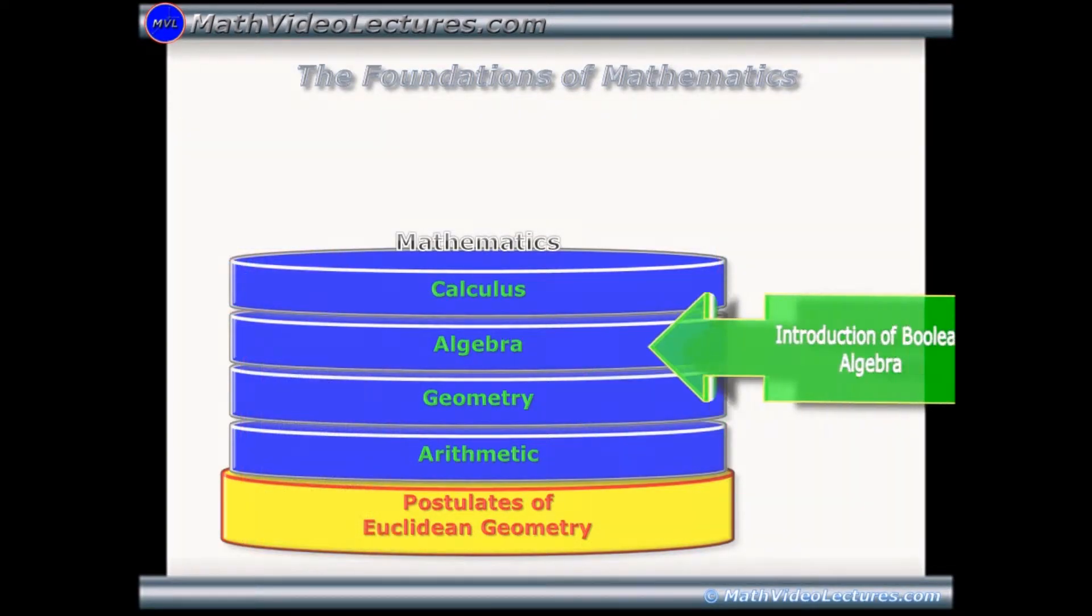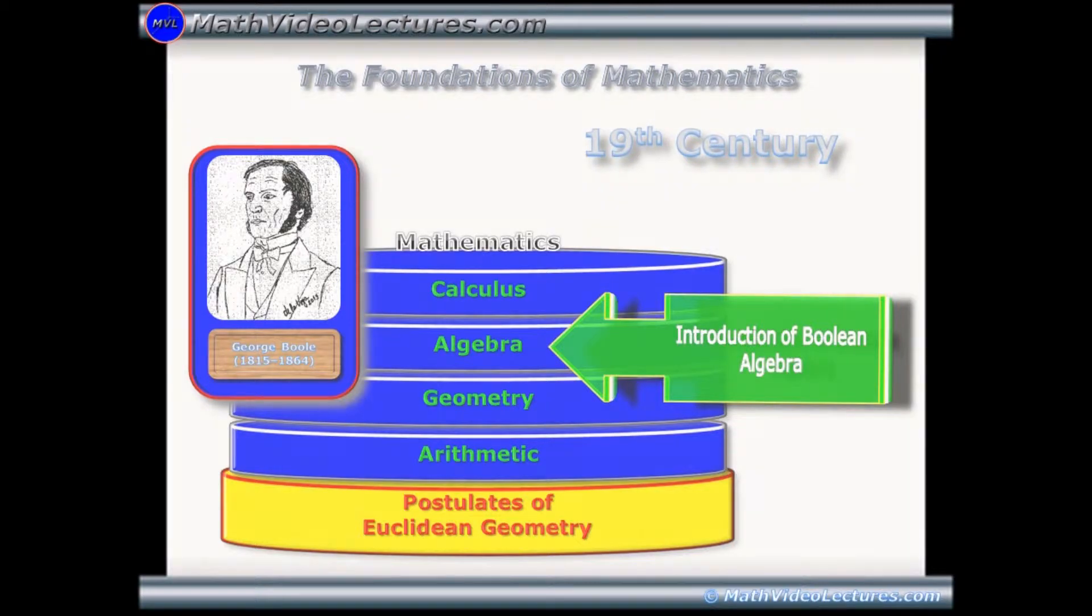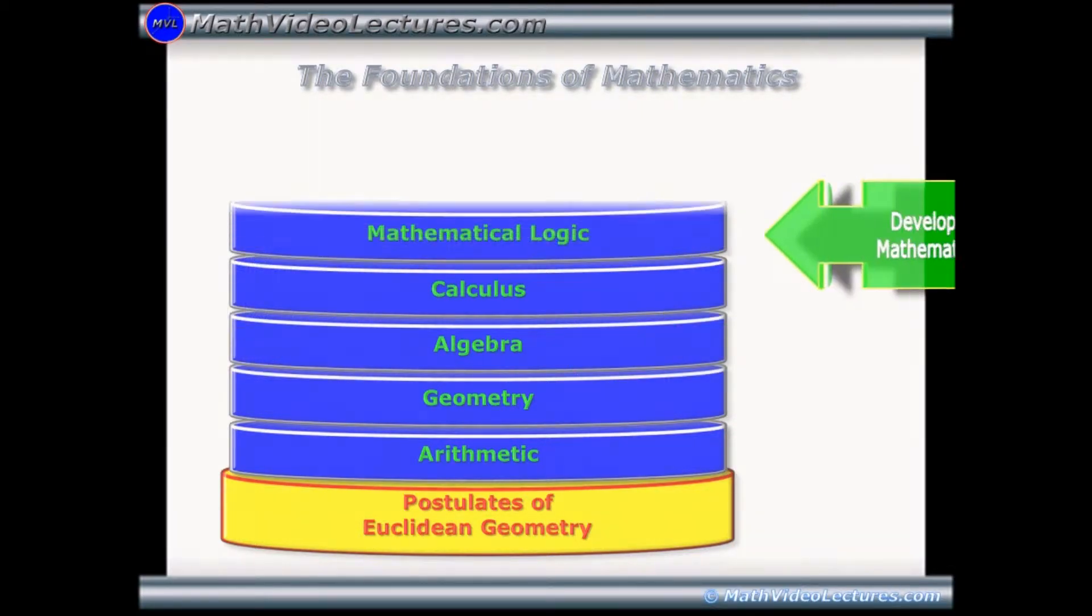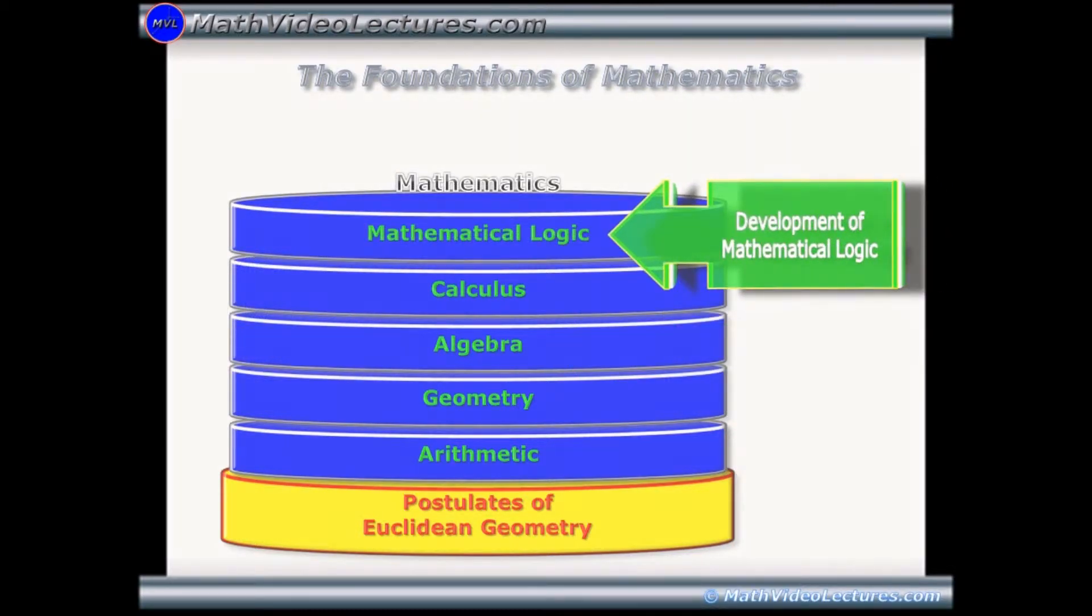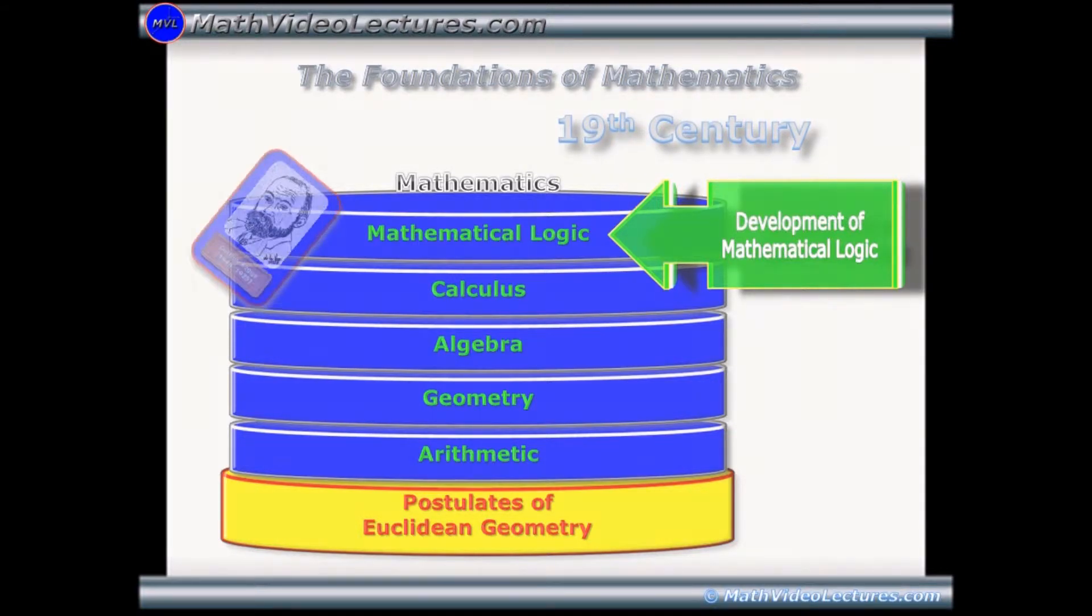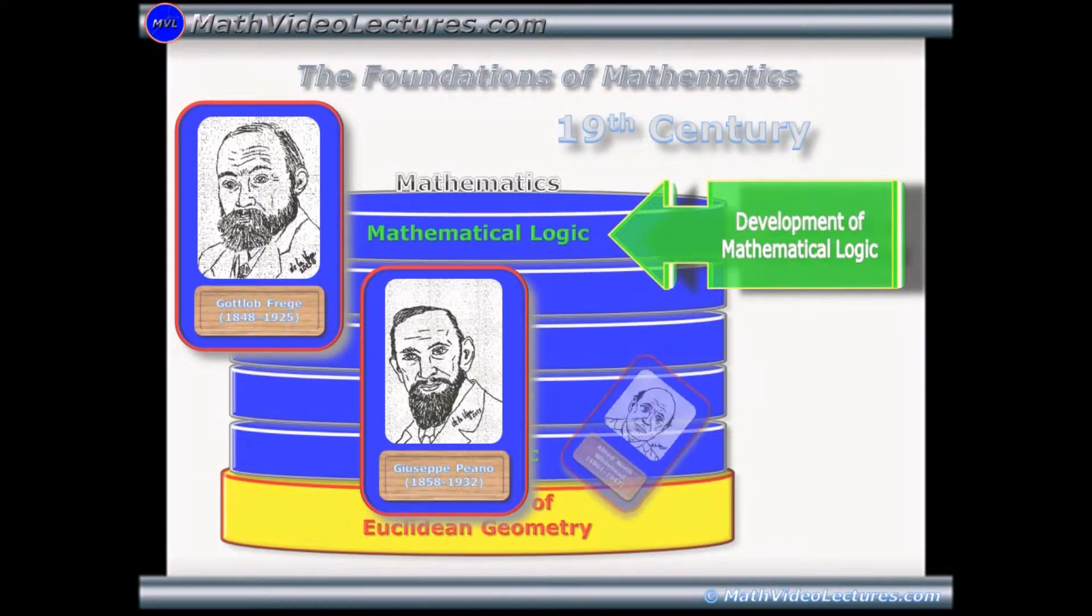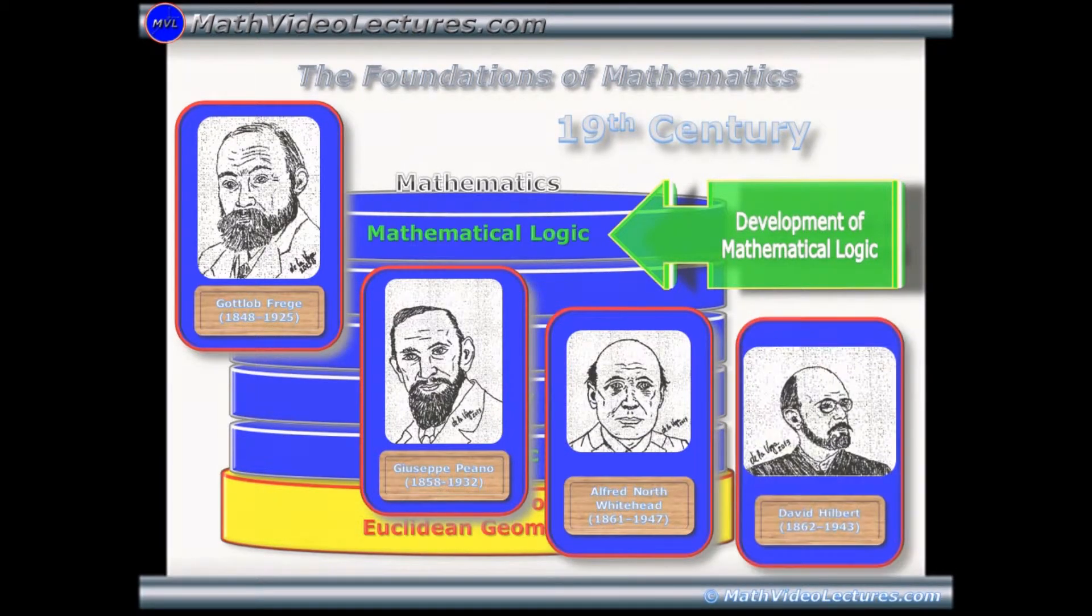The introduction of Boolean algebra by George Boole in the 19th century. The development of mathematical logic, also during the 19th century, by George Boole, Gottlob Frege, Giuseppe Peano, Bertrand Russell, Alfred Whitehead, David Hilbert, and Kurt Gödel, among many others.